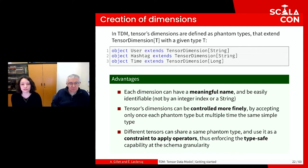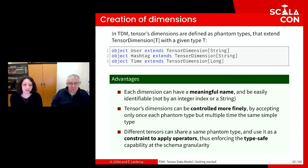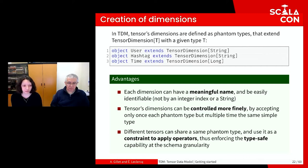The first step to build a tensor is to create its dimensions. Each dimension is a phantom type that extends the class TensorDimension with a parameterized type representing the type of the dimension's values. For example, we can create a dimension of user names of type String. This representation has several advantages: each dimension has a meaningful name contrary to integer indexes, and it allows more fine-grained control. In the example on the slide, we have two dimensions with values of type String — User and Hashtag — but each is a different phantom type.